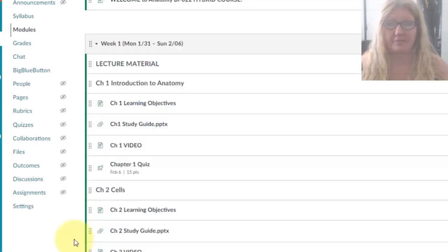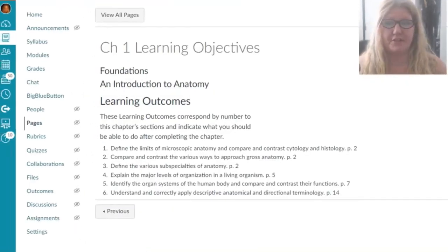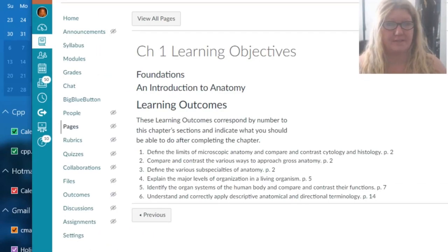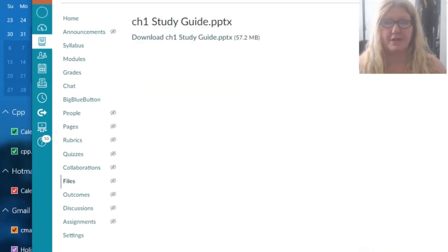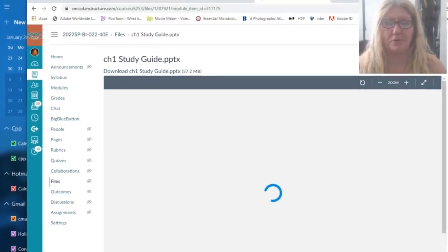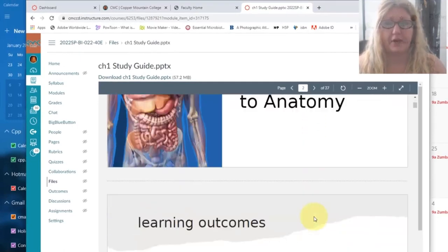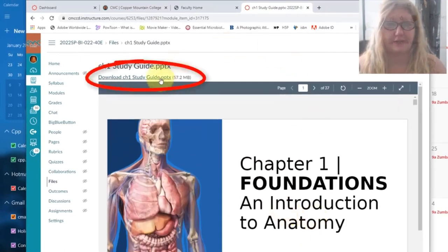Starting week 1, click on the first link of the module. This page gives you the chapter learning objectives. Clicking on next will bring you to the chapter study guide or PowerPoint. This can be viewed online or can be downloaded by clicking on the link here.